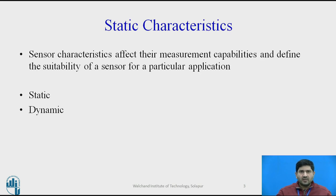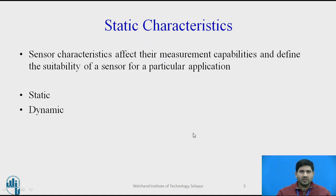Now, what are static characteristics? Sensor characteristics affect their measurement capabilities and define the suitability of a sensor for a particular application. When you choose a sensor for a particular application, you have to go through the list of characteristics which helps build the specification and then make a choice. There is a range of static and dynamic characteristics that you must consider, and depending upon the application, certain weightages will have to be given to one particular characteristic over the other.